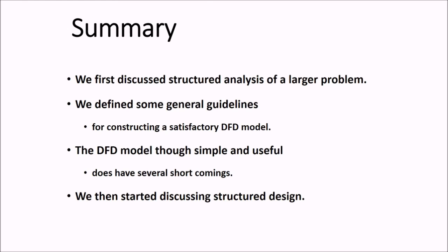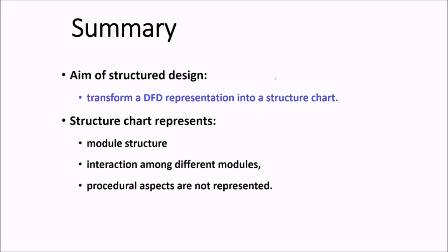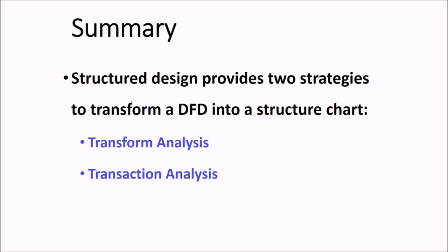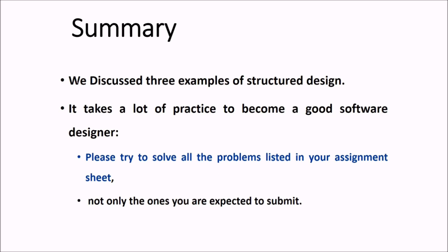And let us summarize what we have done. We have discussed structure analysis of a larger problem. We defined some guidelines for constructing satisfactory DFD. DFD model was quite simple and useful, but do have some shortcomings. We will discuss this also. Then we started today, this structure design. And the aim we discussed it to transform the DFD representation to the structure chart. The structure chart is going to represent module structure, interaction among modules and procedural aspects that are not represented. Structure design provides two strategies, transform analysis and transaction analysis to transform a DFD into a structure chart. We saw the examples of these and we saw three examples. So it takes a lot of practice to become a good software designer. Just try to solve all the problems listed in your assignment in the book of Dr. Rajiv Maal. And then you are good to go. Thank you so much. Take care of yourself. This is what we have done in design, software design.